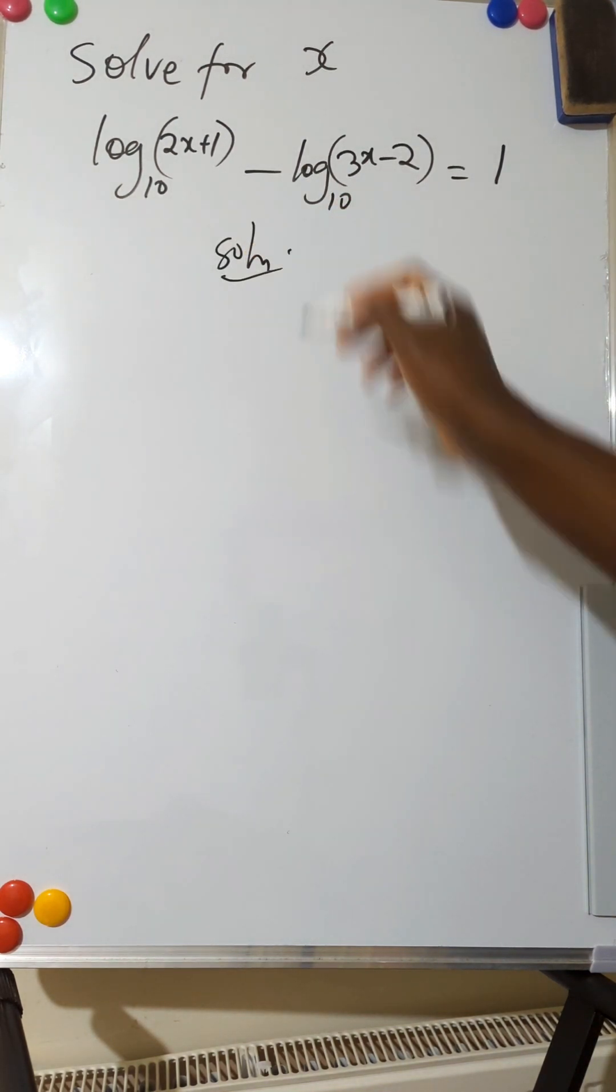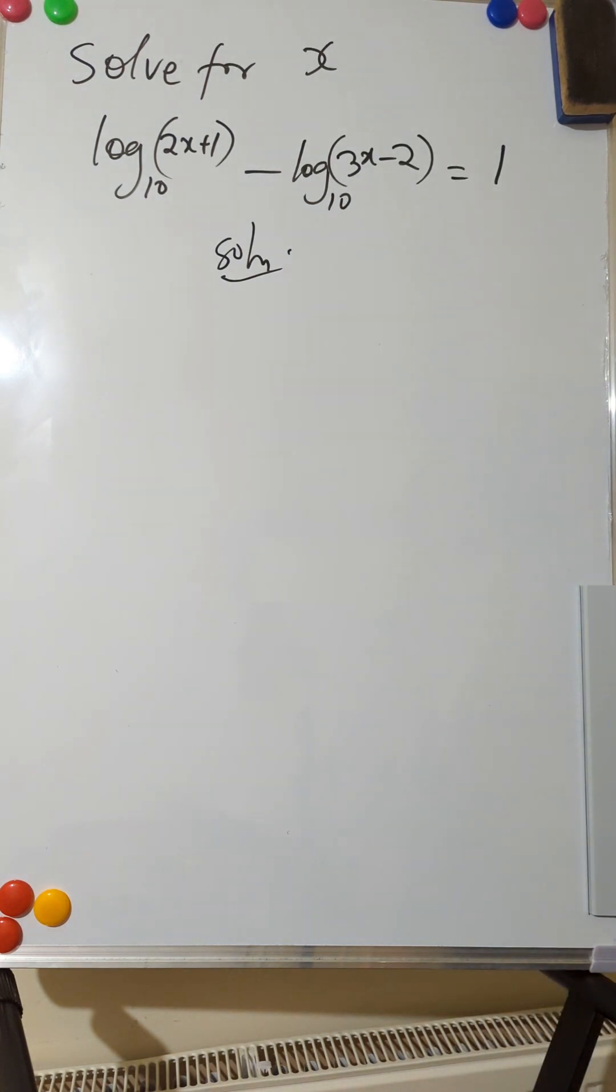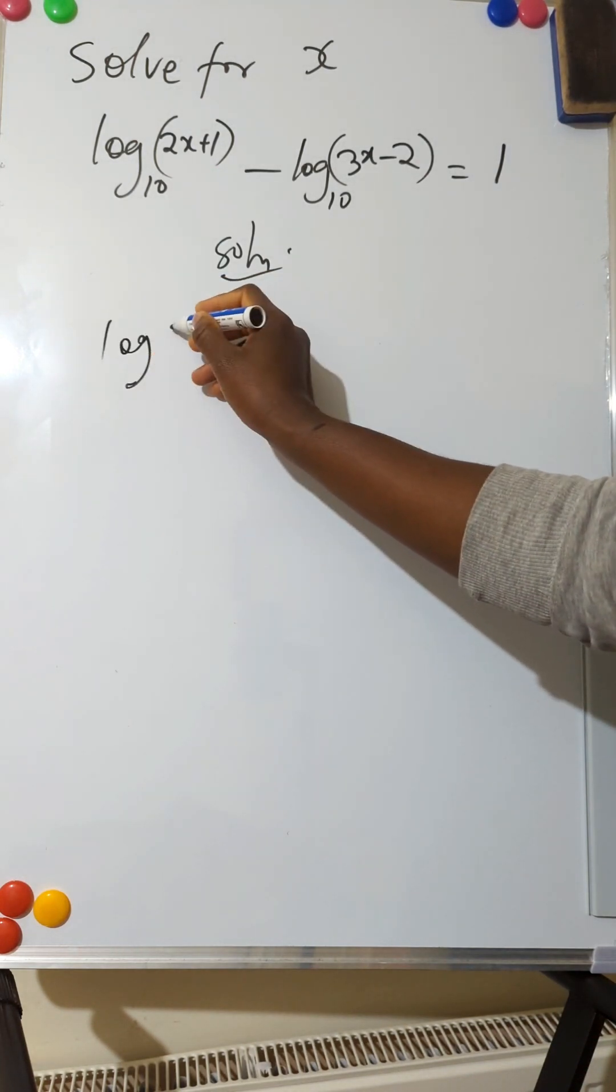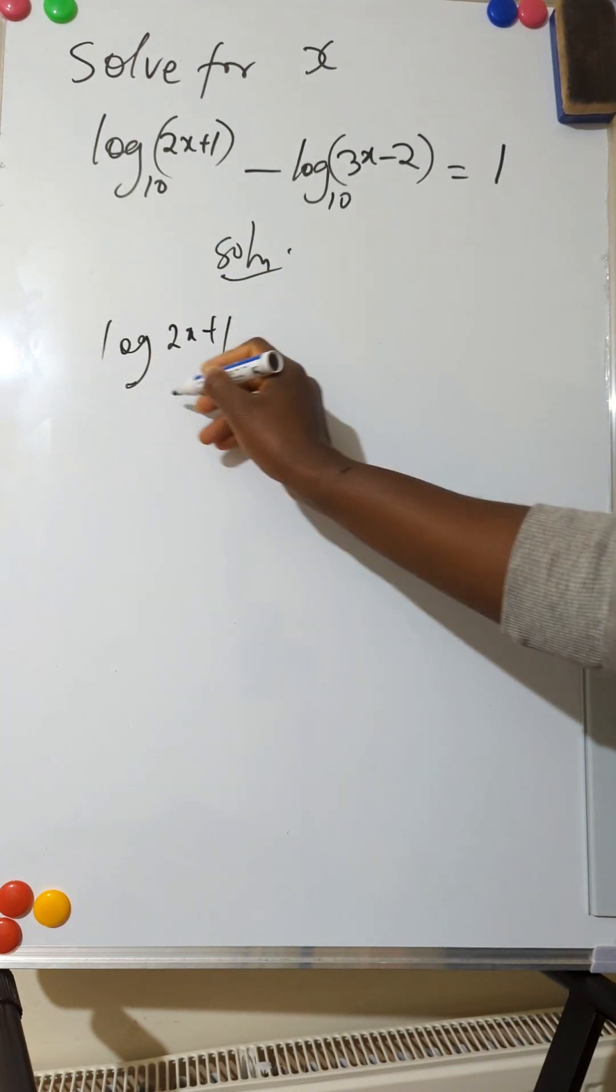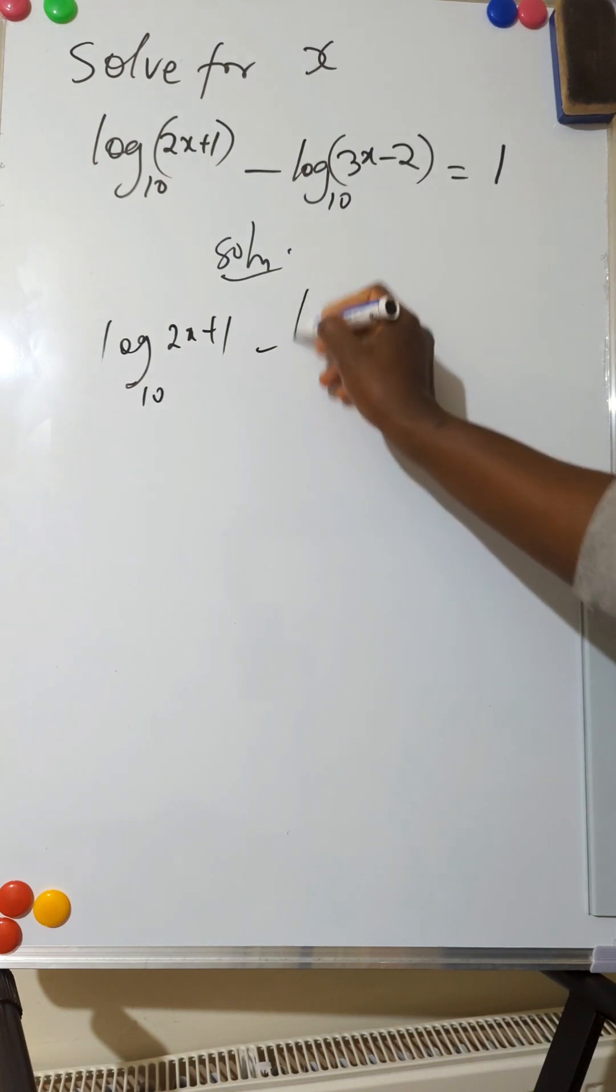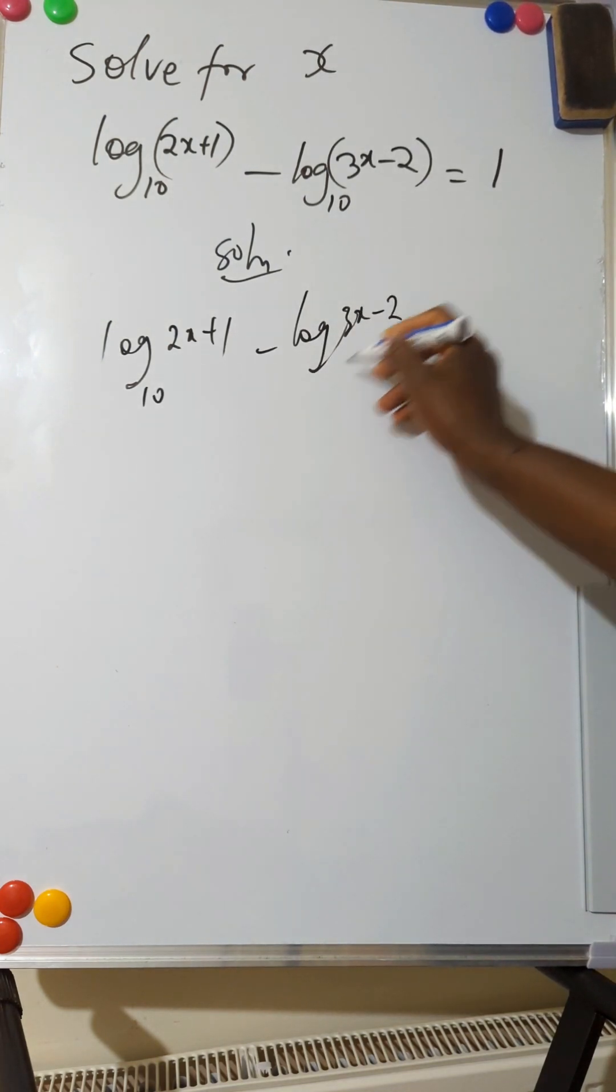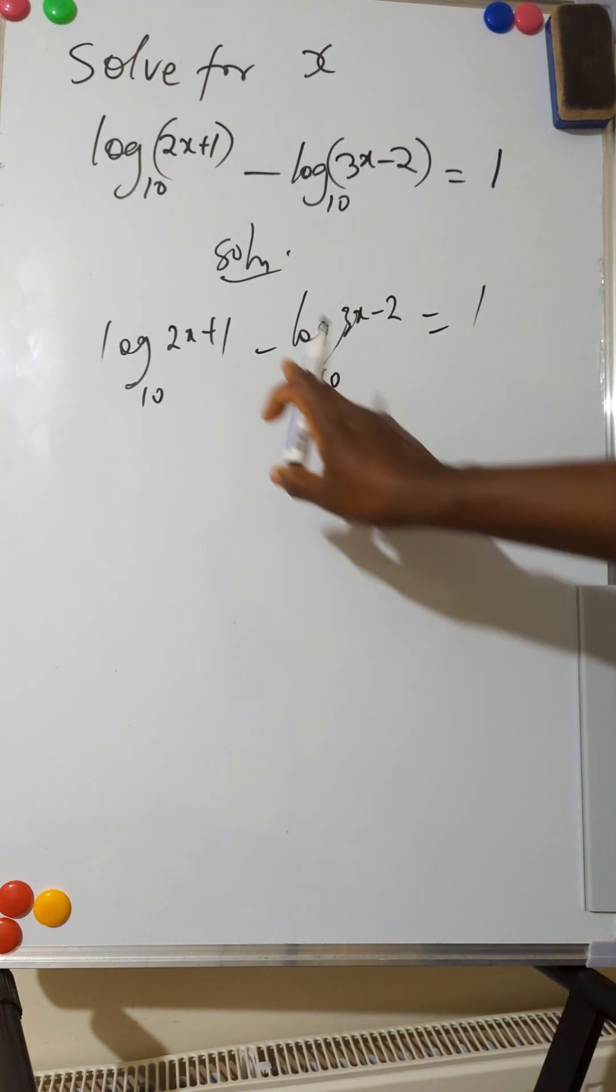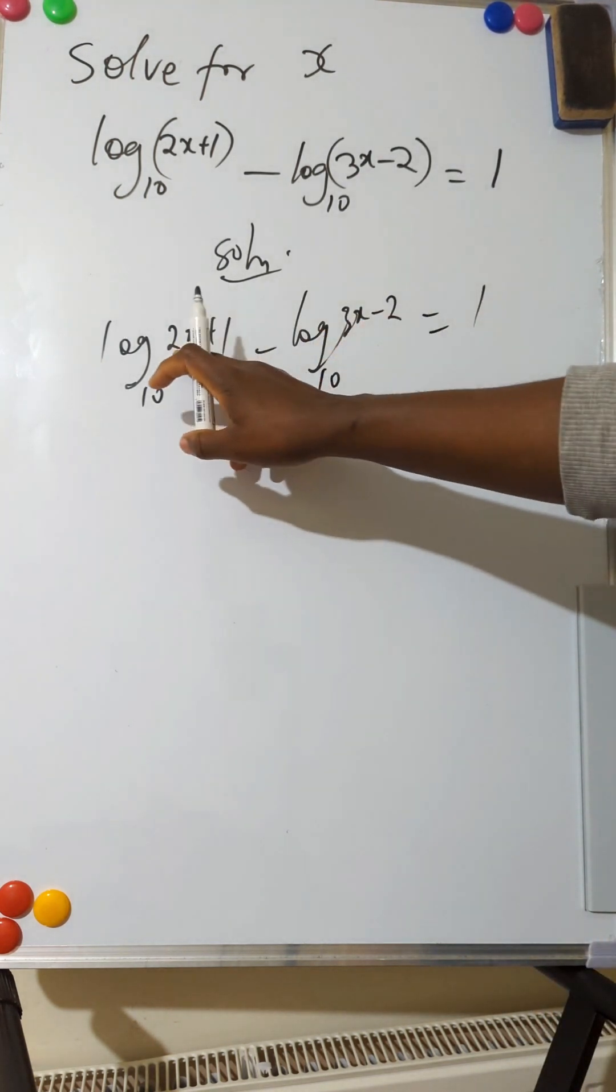We'll just apply the subtraction law or division law of logarithm. The question says log(2x+1) base 10 minus log(3x-2) base 10 equals 1. Now because we're subtracting, we divide the logs, and luckily we have the same base 10.